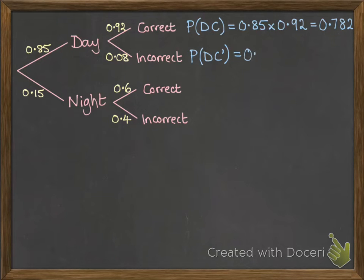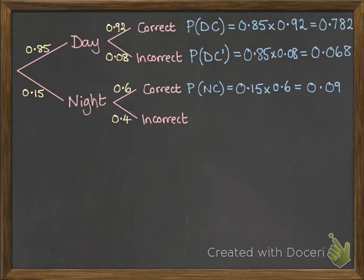Okay, so we've got the probability of that will be 0.85 times 0.08. And then you can see where this is going. The probability of going at night time and correctly identifying the other vessels is going to look like this. And finally going at night time and incorrectly identifying the vessels will be this one.